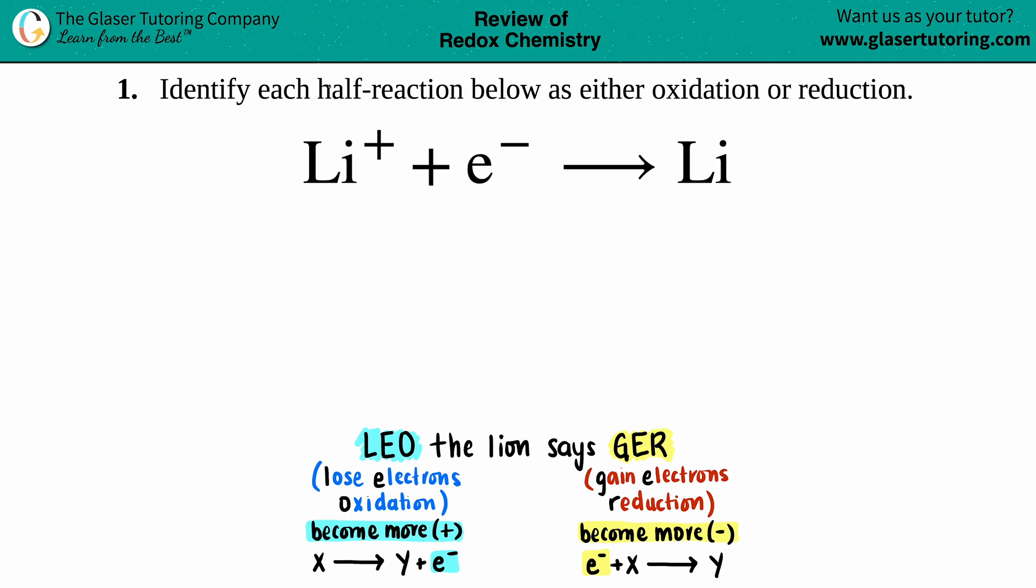Number one: identify each half-reaction below as either oxidation or reduction. We have the equation lithium plus, so Li+ plus an electron e- (e minus is always an electron), and that will yield just the lithium metal.